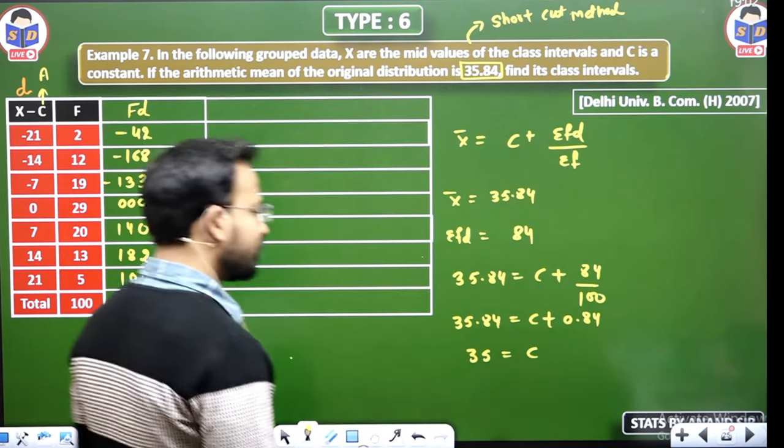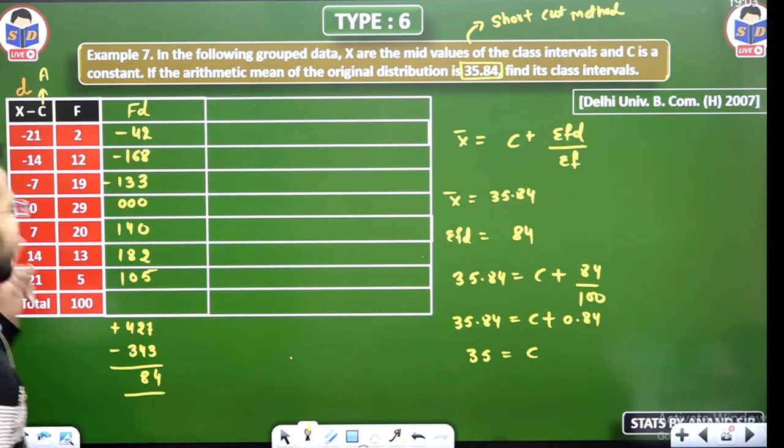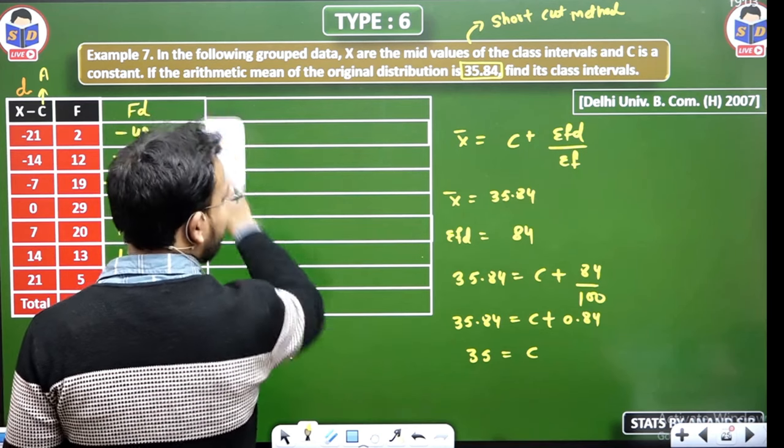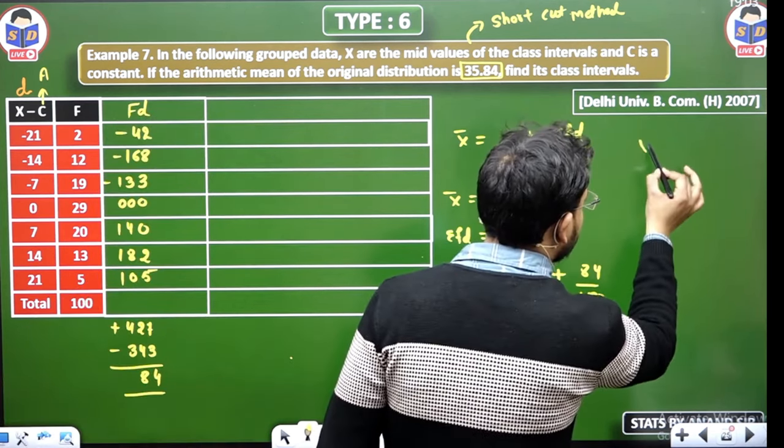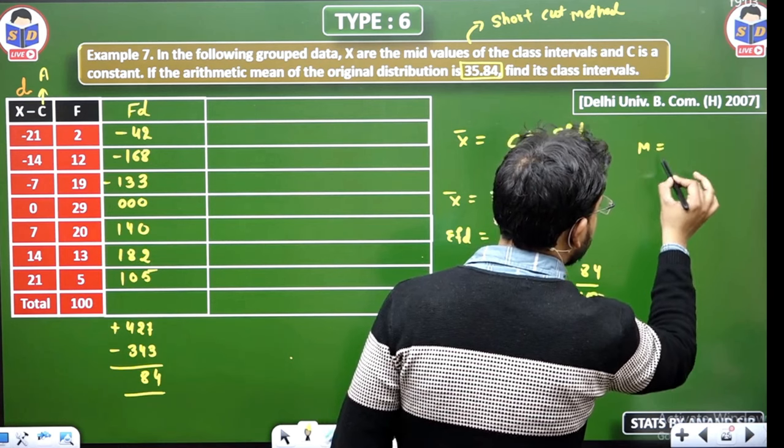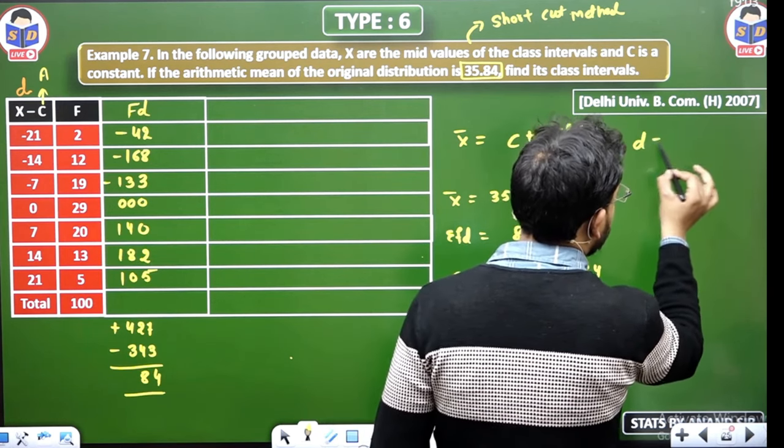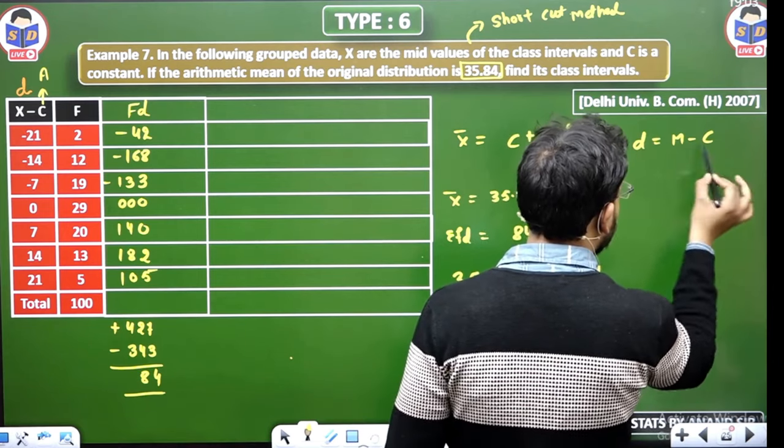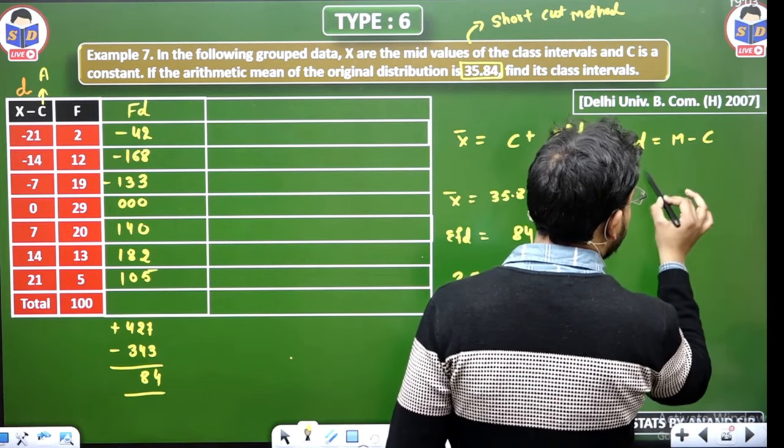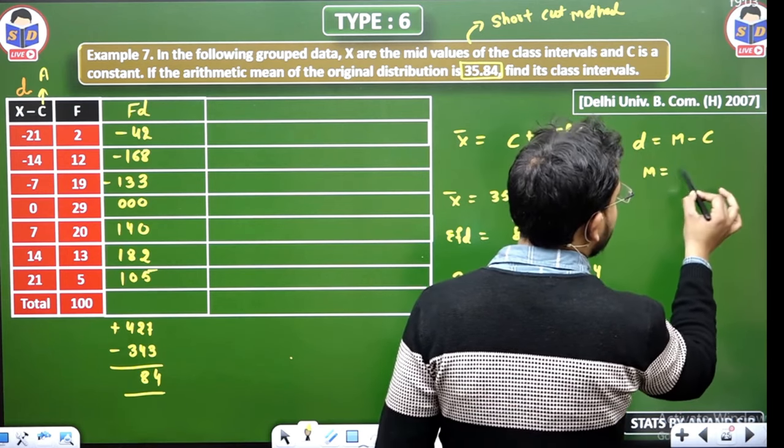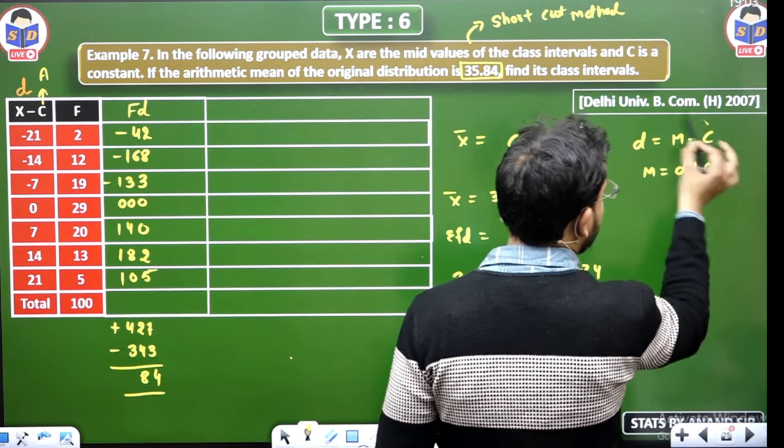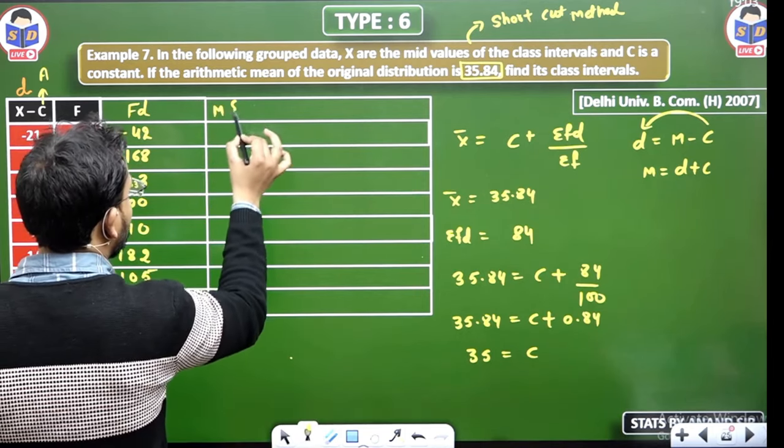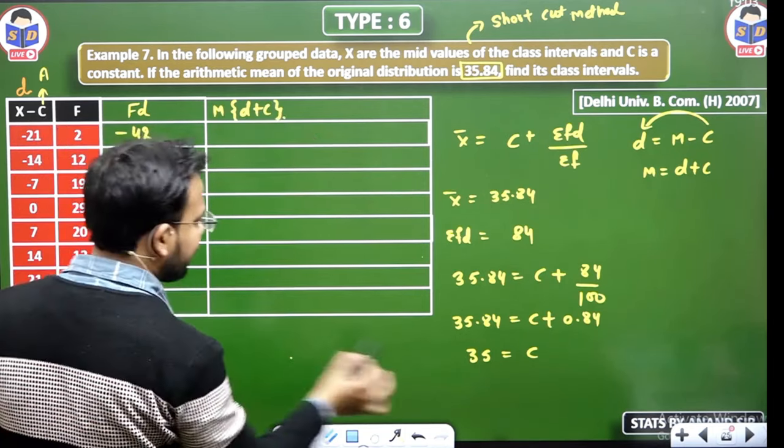So you found out, how D comes, D equals mid-value minus C, this is it. And you have D, so you can get the mid-value. D plus C, this is the mid-value. So you can get the mid-value. What is D plus C? And C is 35.